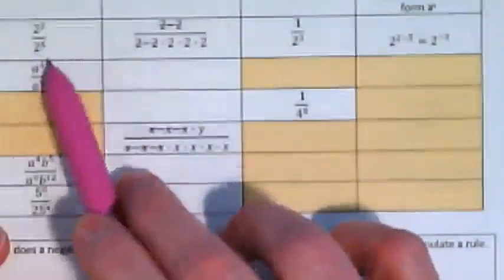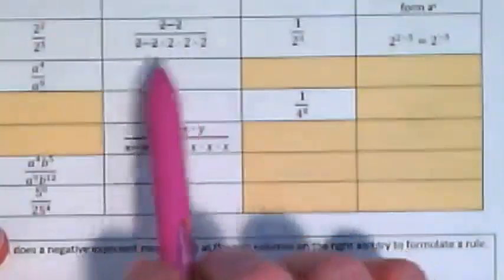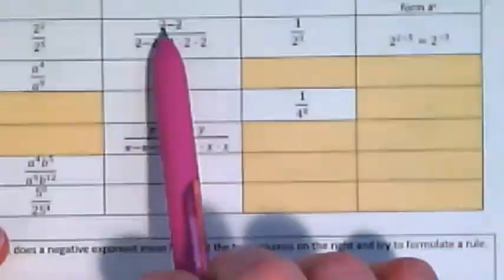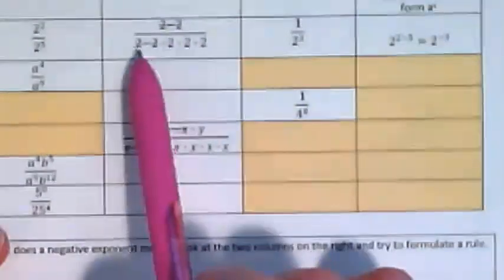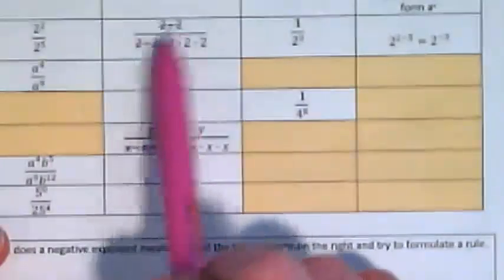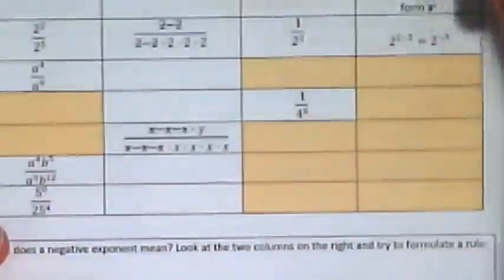So this is 2 squared over 2 to the fifth power. And the repeated multiplication shows the two twos and the five twos. And we reduce those numbers by this. We're going to take away two twos from the numerator and two twos from the denominator. They cancel out because 2 over 2 is 1, 2 over 2 is 1.